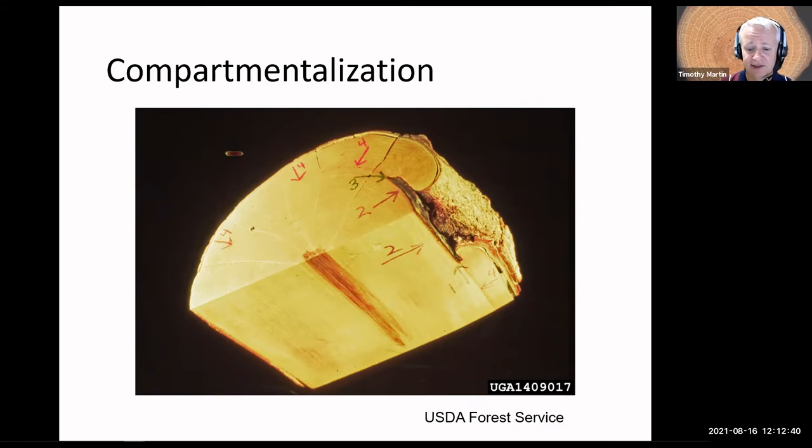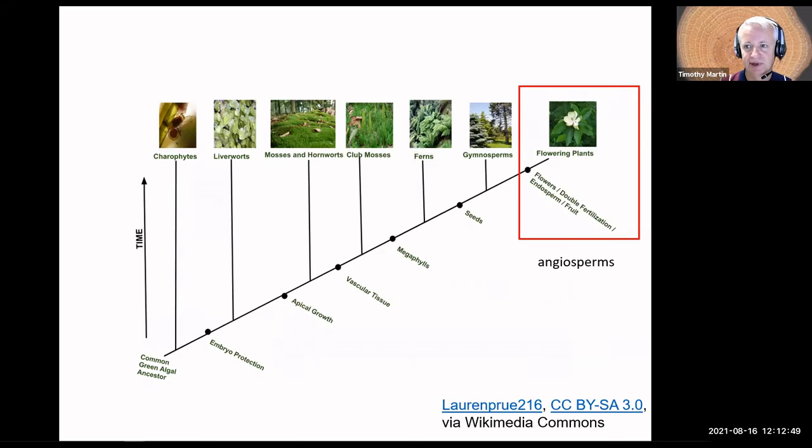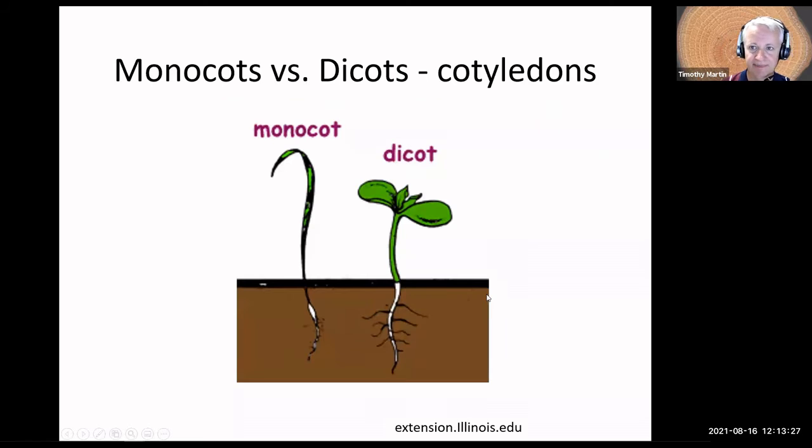So let's talk about how trees are classified. Trees in general fall into two broad classifications, angiosperms and gymnosperms. Angiosperms are flowering plants. They produce a seed encased within a fruit. And they're more evolutionarily recent than gymnosperms. I'm going to talk first about angiosperms. We can further break trees out into two groups within the angiosperms, monocots or dicots.